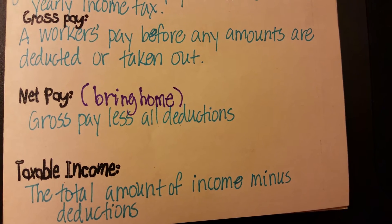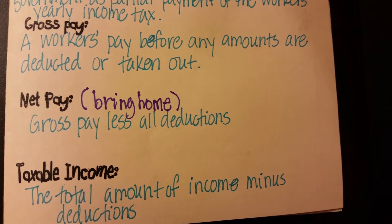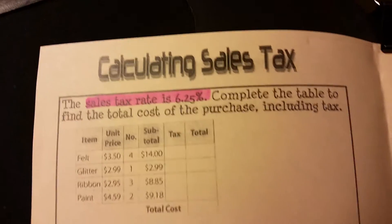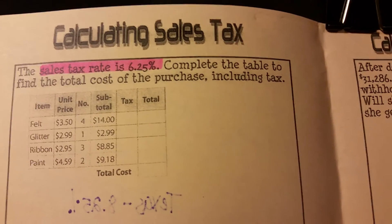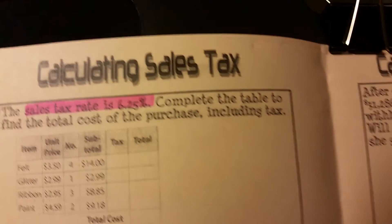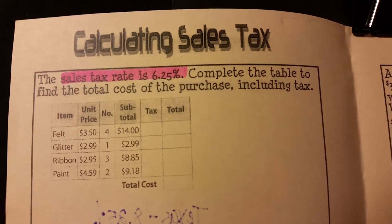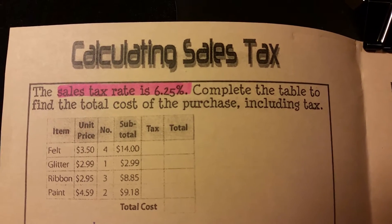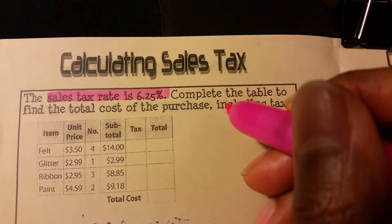We'll come back to this page so you can get those vocabulary words and definitions copied down. For our first example, we're going to calculate sales tax. With your highlighter, highlight the sales tax rate we're going to be working with. In this example, our sales tax rate is 6.25%. We're going to complete this table to find the total cost for the purchase, including tax.